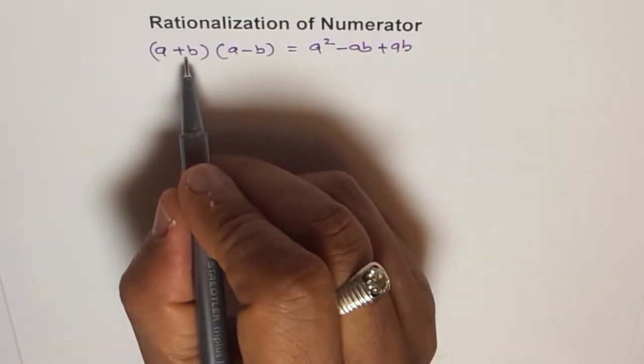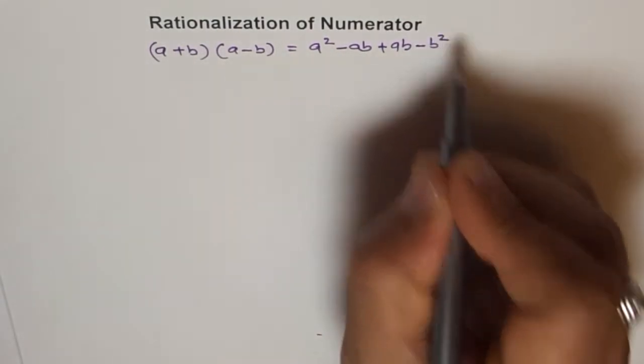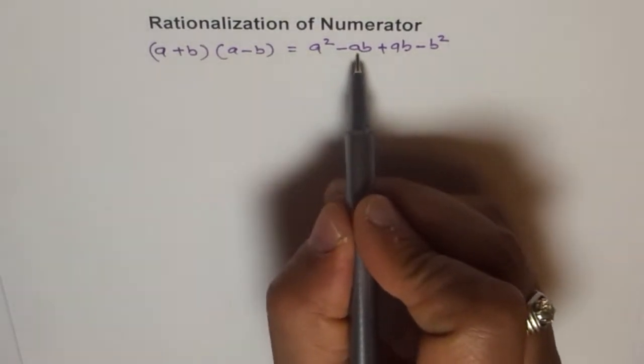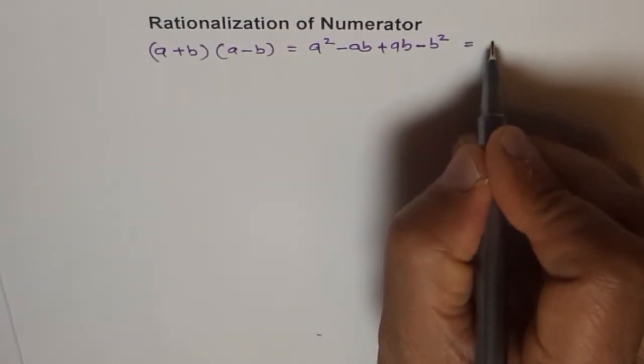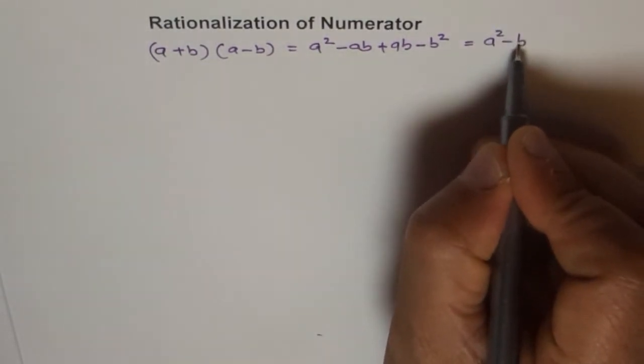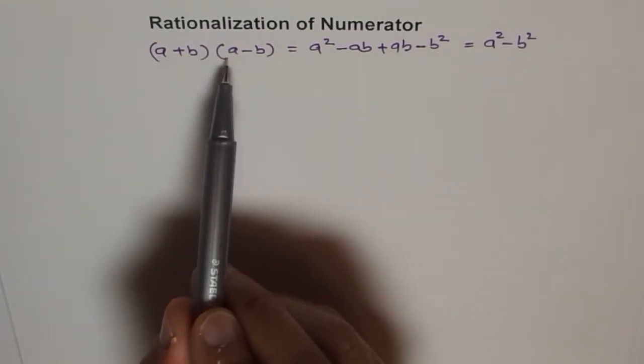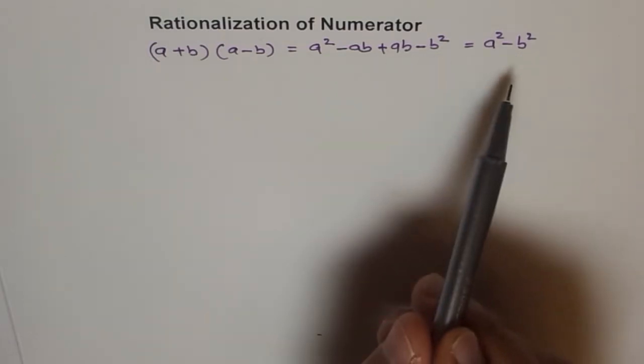And when you do b times minus b, you get minus b square. Now here, in the center is minus ab and plus ab, which is zero. So ultimately, what you get is a square minus b square. So when you have a product of sum and difference, then what you get is difference of squares. And this is used for factoring.